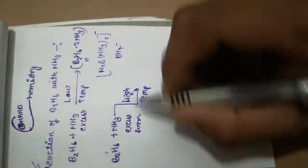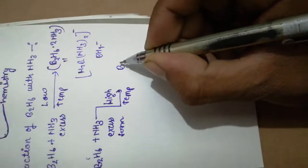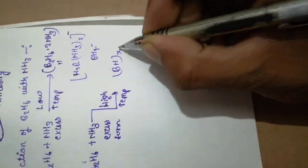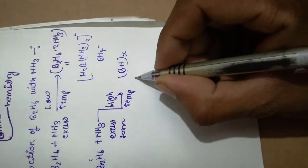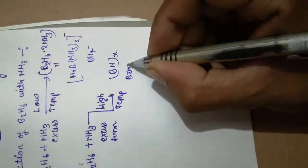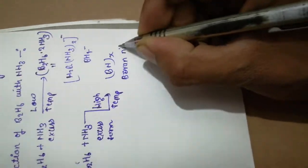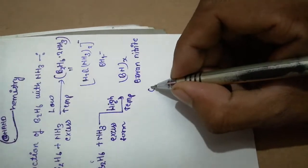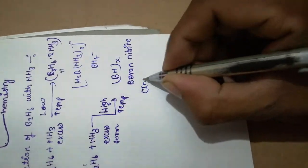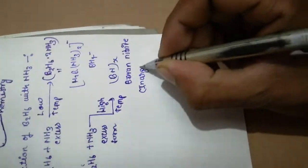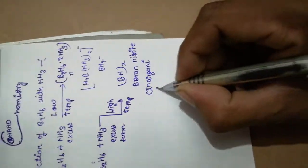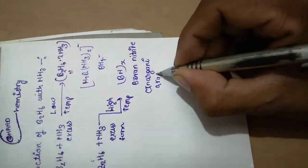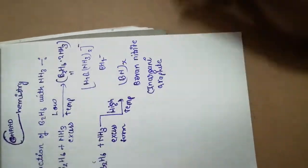The product is BN. This is Boron Nitride, also called Inorganic Graphite.